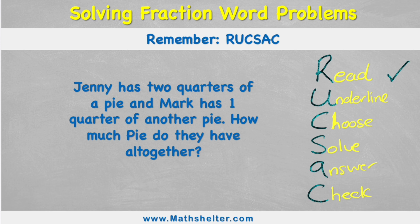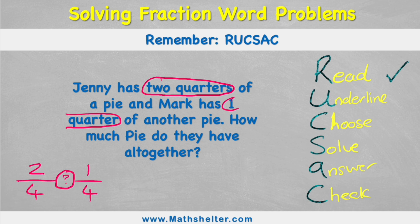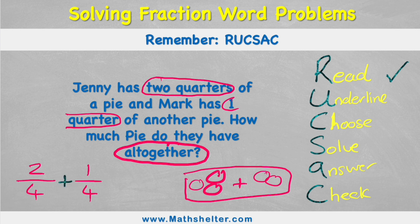Now we underline the key information. I'm going to underline the two fractions: two quarters and one quarter. But I also need a key word — it says 'altogether.' If I have three apples here and two apples there and I want to know how many altogether, I have to add them. So my operation is addition.